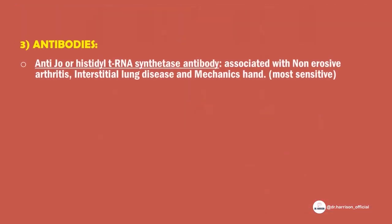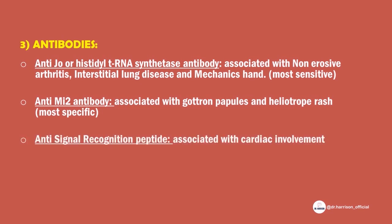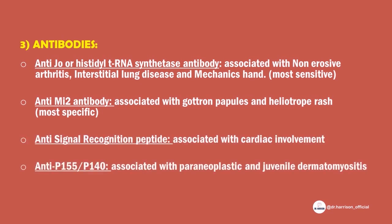Antibodies found in dermatomyositis: 1. Anti-Jo-1 (histidyl-tRNA synthetase) antibody — associated with non-erosive arthritis, interstitial lung disease, and mechanic's hand. 2. Anti-Mi-2 antibody — associated with Gottron's papules and heliotrope rash. 3. Anti-signal recognition peptide — associated with cardiac involvement. 4. Anti-p155/p140 — associated with paraneoplastic and juvenile dermatomyositis.